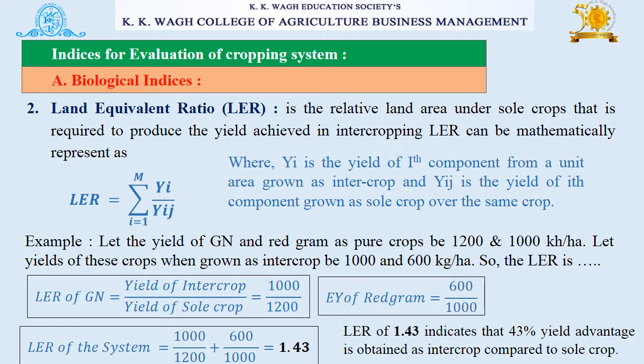Next is land equivalent ratio (LER). It is the relative land area under sole crops that is required to produce the yield achieved in intercropping. LER can be mathematically represented by its formula. With the example given, we calculate the LER of the system as 1.43, which indicates that a 43% yield advantage is obtained when intercropped compared to sole crop.